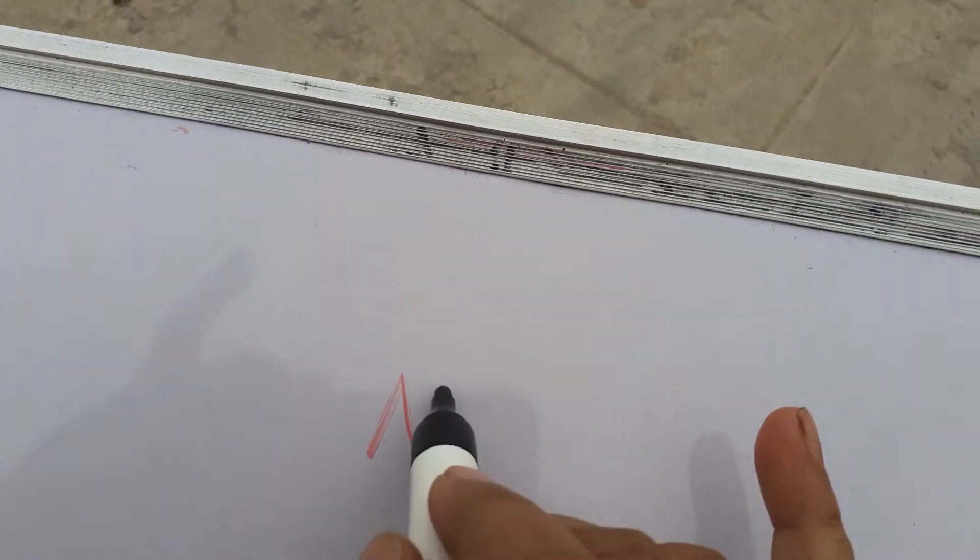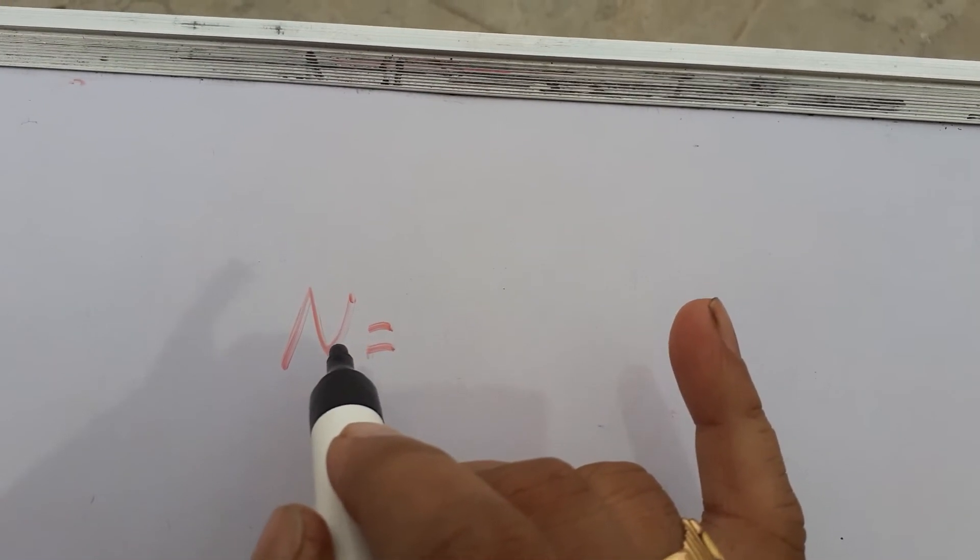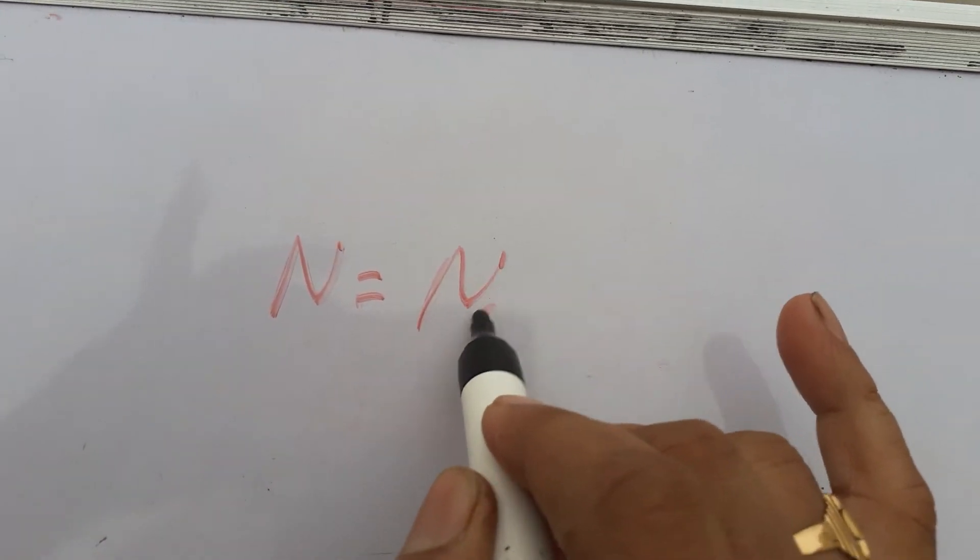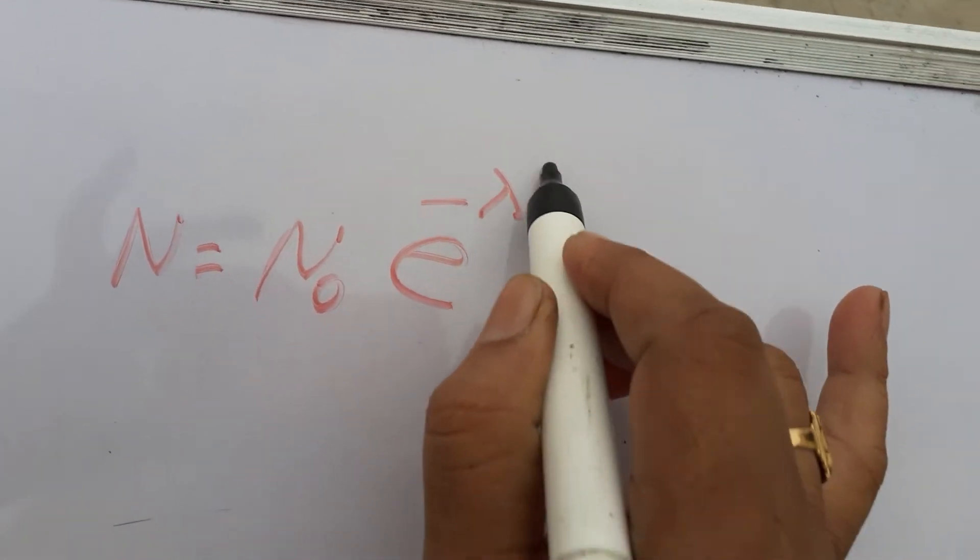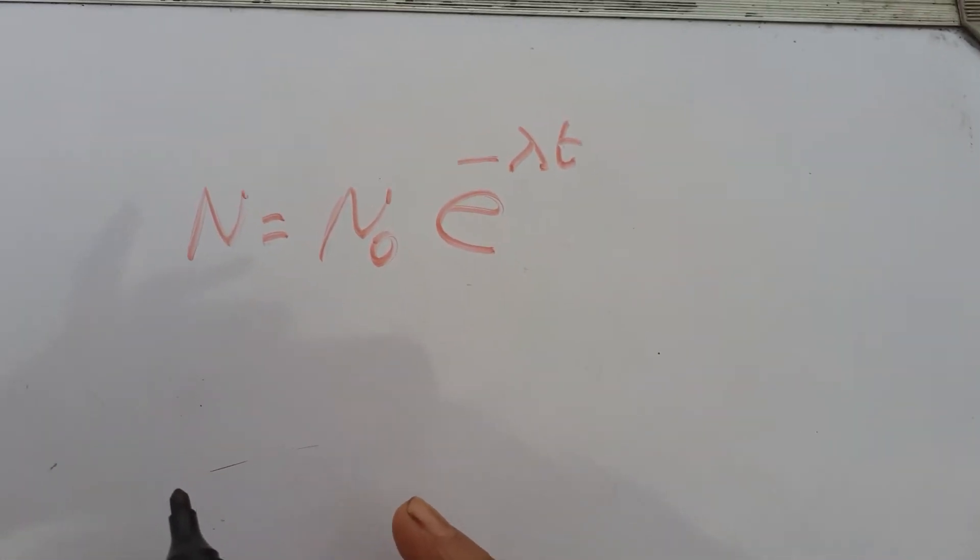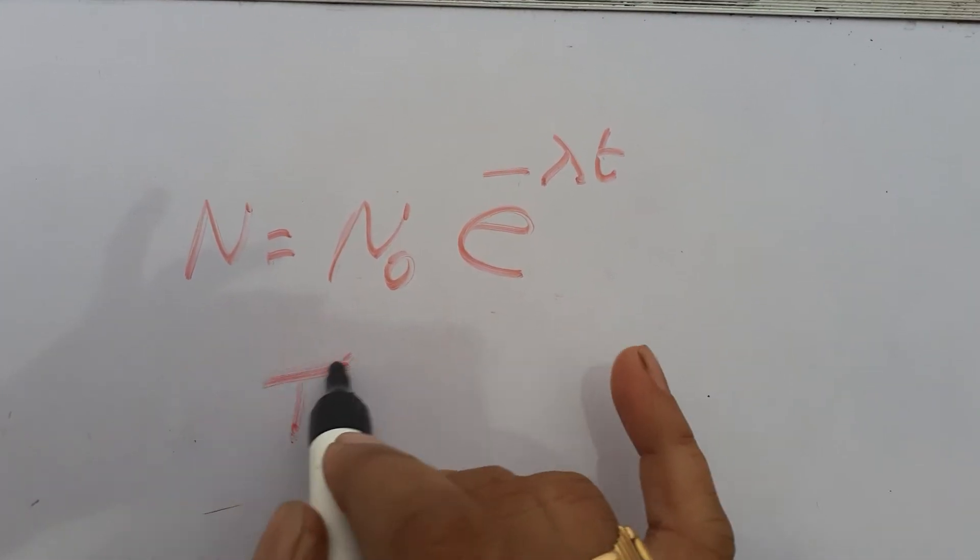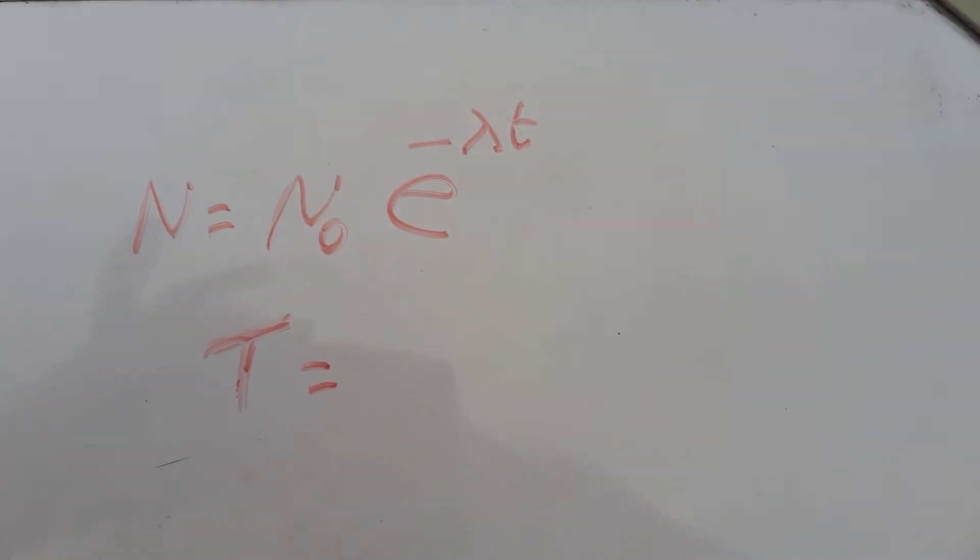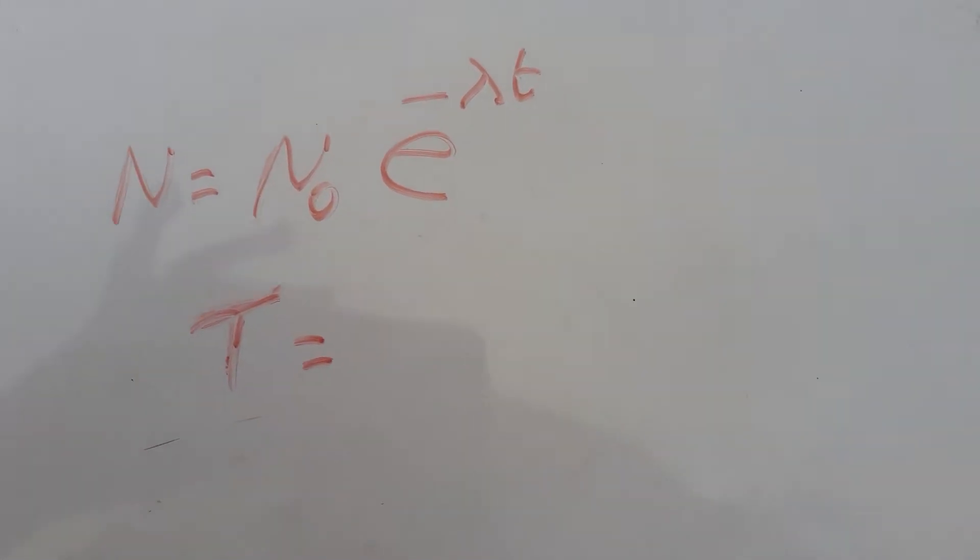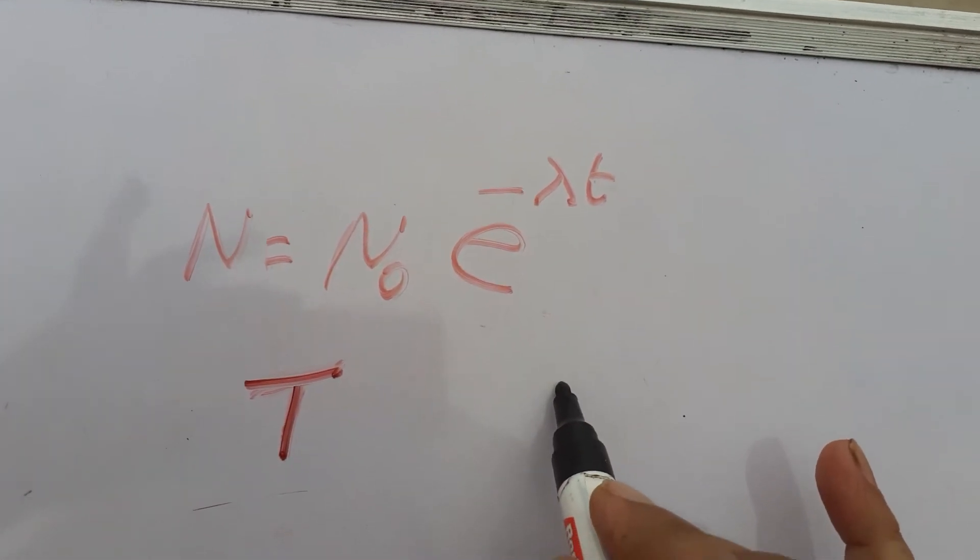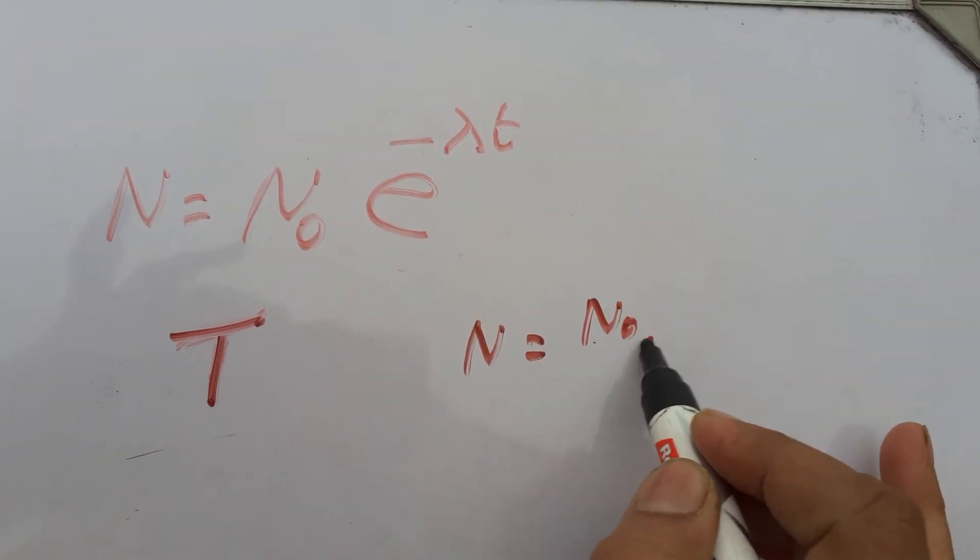And where we use it in physics? We can see in radioactivity: after time t, number of atoms present N = N₀e^(-λt). From this we need to derive the expression for half-life period. Half-life period means the time in which the number of atoms becomes half of the initial number.